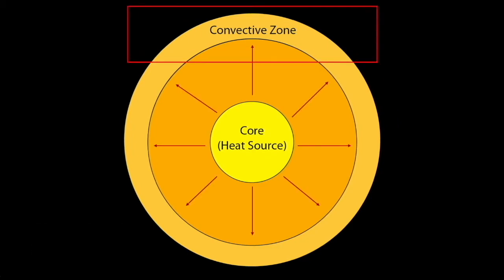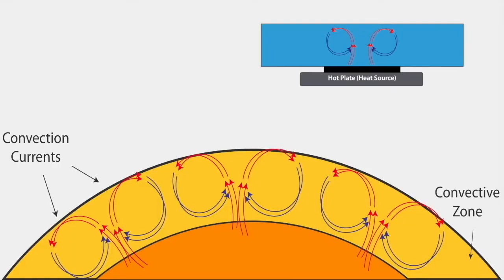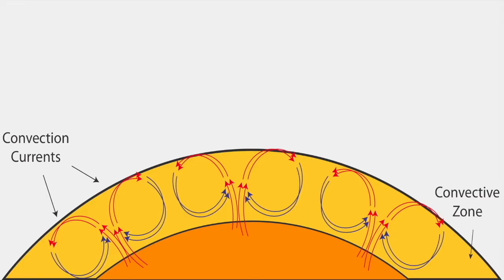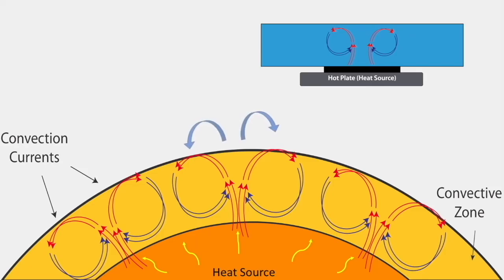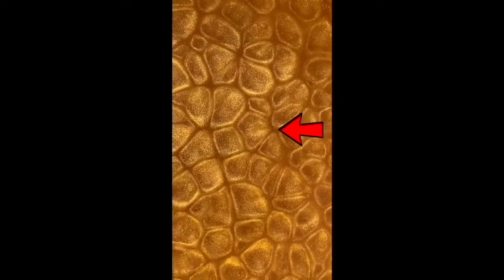Just like with the tub of water, we also see convection in our sun because heat is transferred from the core outwards. Let's zoom in on the convective zone. We see convection currents similar to those in the tub of water, because heat is being transferred through a fluid — in this case, heat from the core of the sun is being transferred through the sun's plasma. We see the same thing where heat rises up through the center, and then as it cools, it falls back down along the edges.